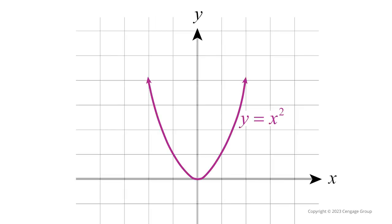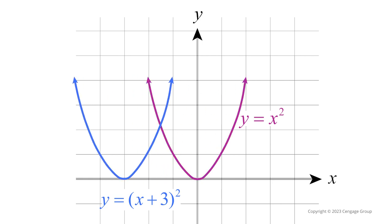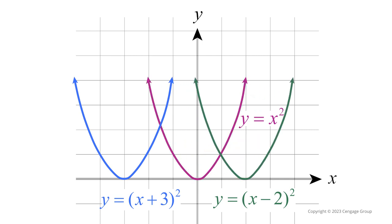For example, here's the graph of the parabola y equals x squared again. The blue graph is the graph of y equals the quantity x plus 3 squared, and this graph is shifted to the left 3 units. The green graph is the graph of y equals the quantity x minus 2 squared, and this graph is shifted to the right 2 units.